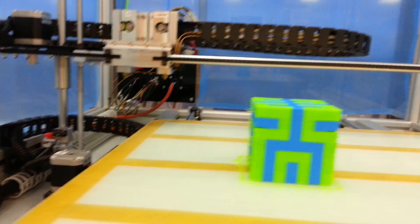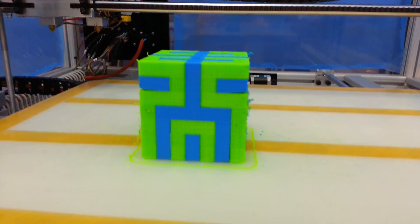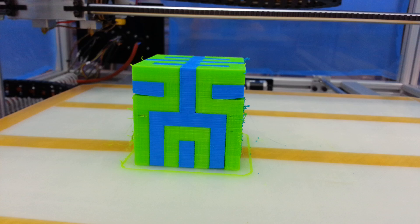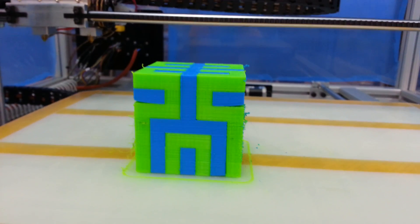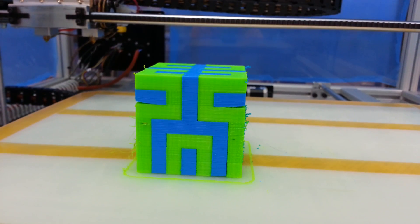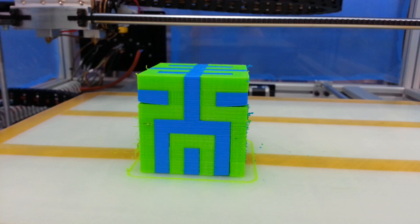Today we've printed a two-color block. The blue is printed in HIPS (high-impact polystyrene), and the neon green is printed in PLA.